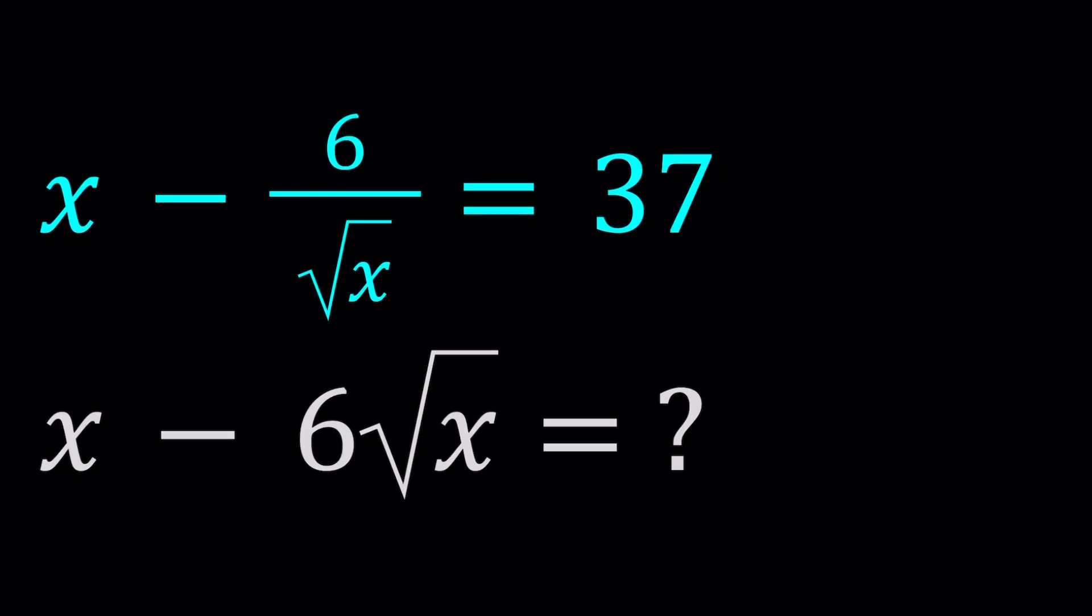Hello everyone. In this video, we're going to be working with a really nice radical expression. We have x minus 6 over square root of x equals 37, and we're going to evaluate, based on the values of x, x minus 6 times the square root of x. And I'll be presenting three methods.